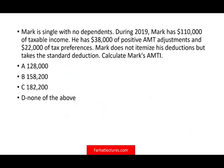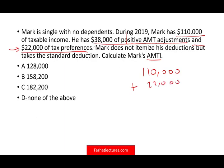Next question: Mark is single with no dependents. During 2019, Mark has $110,000 of taxable income, $38,000 of positive AMT adjustments, and $22,000 of tax preferences. Mark does not itemize his deductions but takes the standard deduction. Calculate Mark's alternative minimum taxable income. We start with $110,000, add the $22,000 of preferences, and add the positive $38,000 AMT adjustment. That brings us to $170,000.